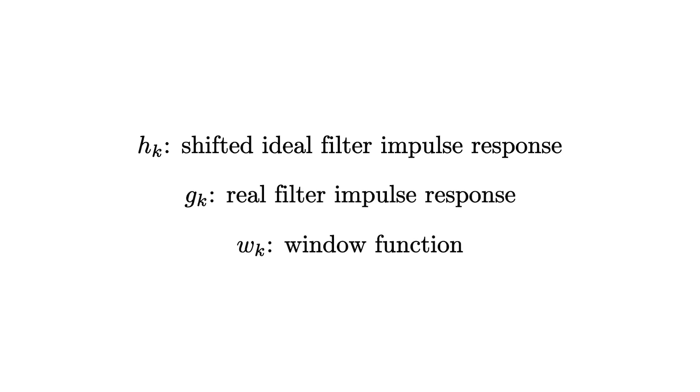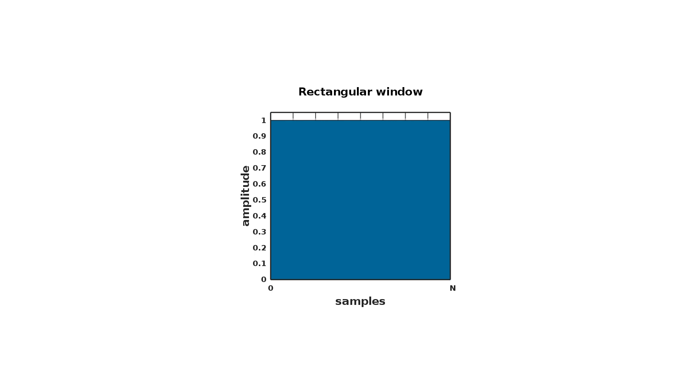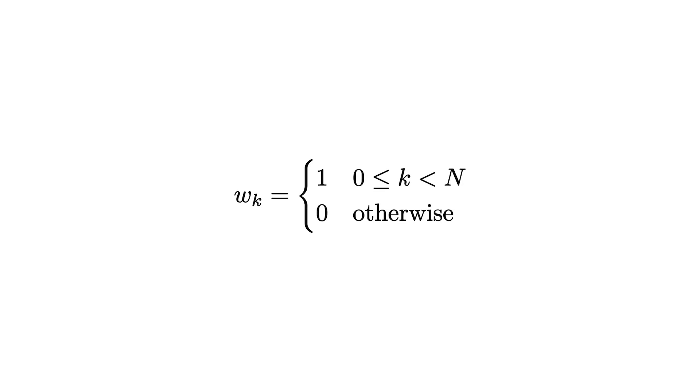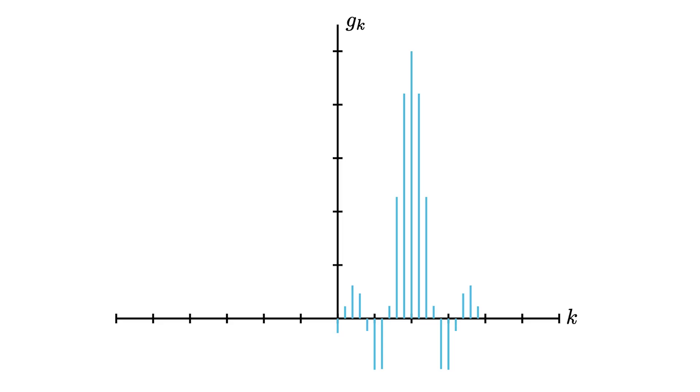Let's represent our ideal impulse response that has been shifted as H sub K — the ideal impulse response of our ideal low pass filter after shifting. Our actual filter is going to have an impulse response G sub K, which is the product of H sub K and some window function W sub K. The simplest window function we can think of is just a rectangular window, which chops off the negative parts and the positive parts after a certain number of samples N. So W sub K equals one for zero up to the Nth sample and zero everywhere else, and multiplying by H sub K gives us G sub K.